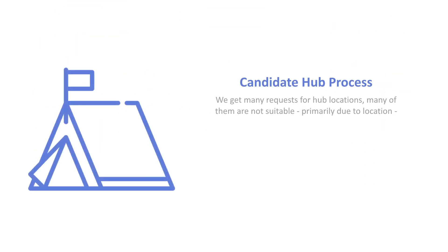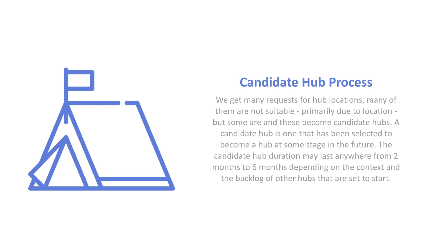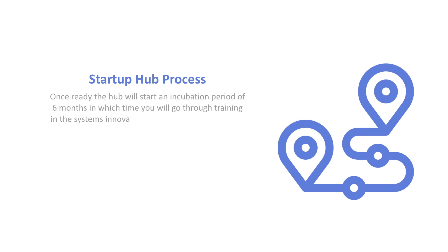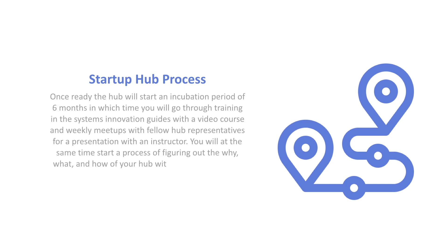A few words about candidate hubs: we get many requests for hubs, but many are not suitable, primarily due to location. Those that are suitable become candidate hubs — ones that have been selected to become a hub at some stage in the future. The candidate hub duration may last anywhere from two to six months, depending on context and the backlog of other hubs that need to be started. Once ready, the hub will start an incubation period of six months.